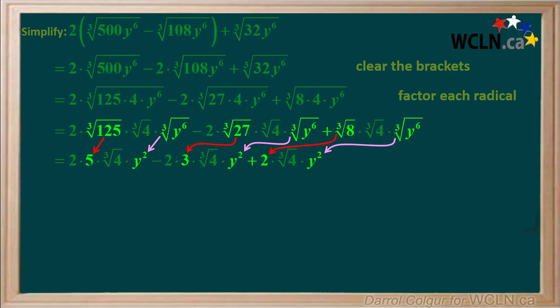The purple arrows show that the cube roots of the 3y to the sixths are each y squared. And the red arrows show that the cube root of 125 is 5, the cube root of 27 is 3, and the cube root of 8 is 2.